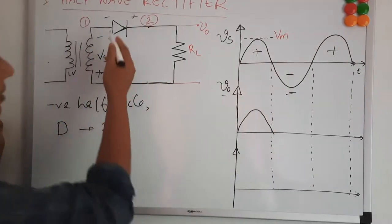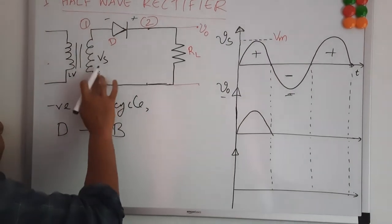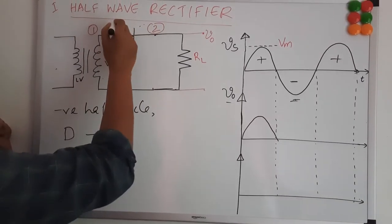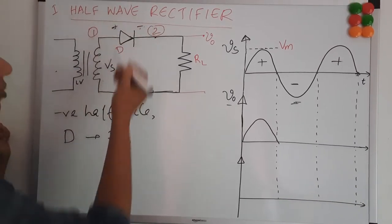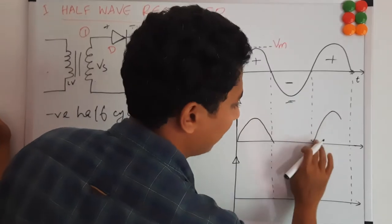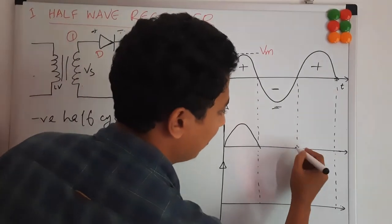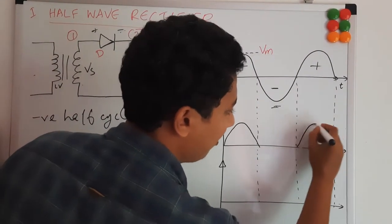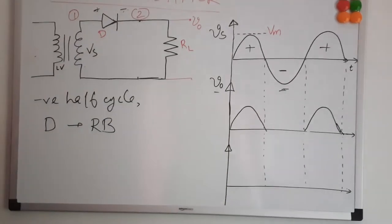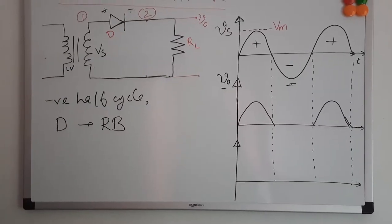Once again, the next positive half-cycle comes, and the same condition returns: your diode will become forward biased and will conduct. This is how a half-wave rectifier works under normal conditions.